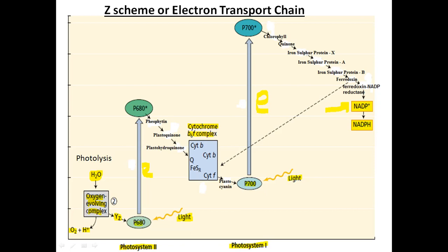The electrons ejected from photosystem 2 are received by pheophytin, and then transferred to plastoquinone. Pheophytin acts as an electron acceptor when receiving electrons, but then donates electrons to plastoquinone, making it an electron donor. So at the same time it is reduced and then oxidized.